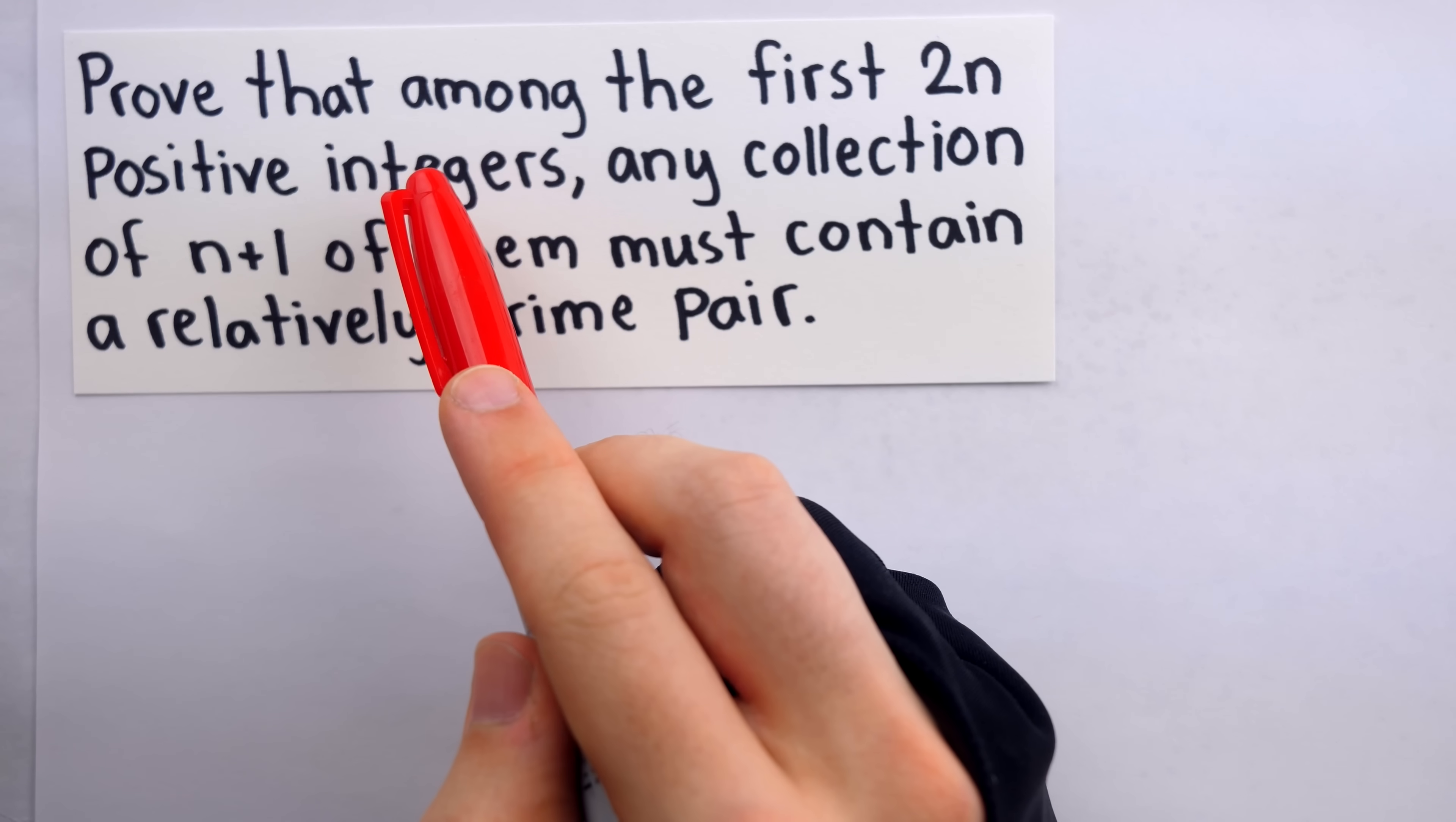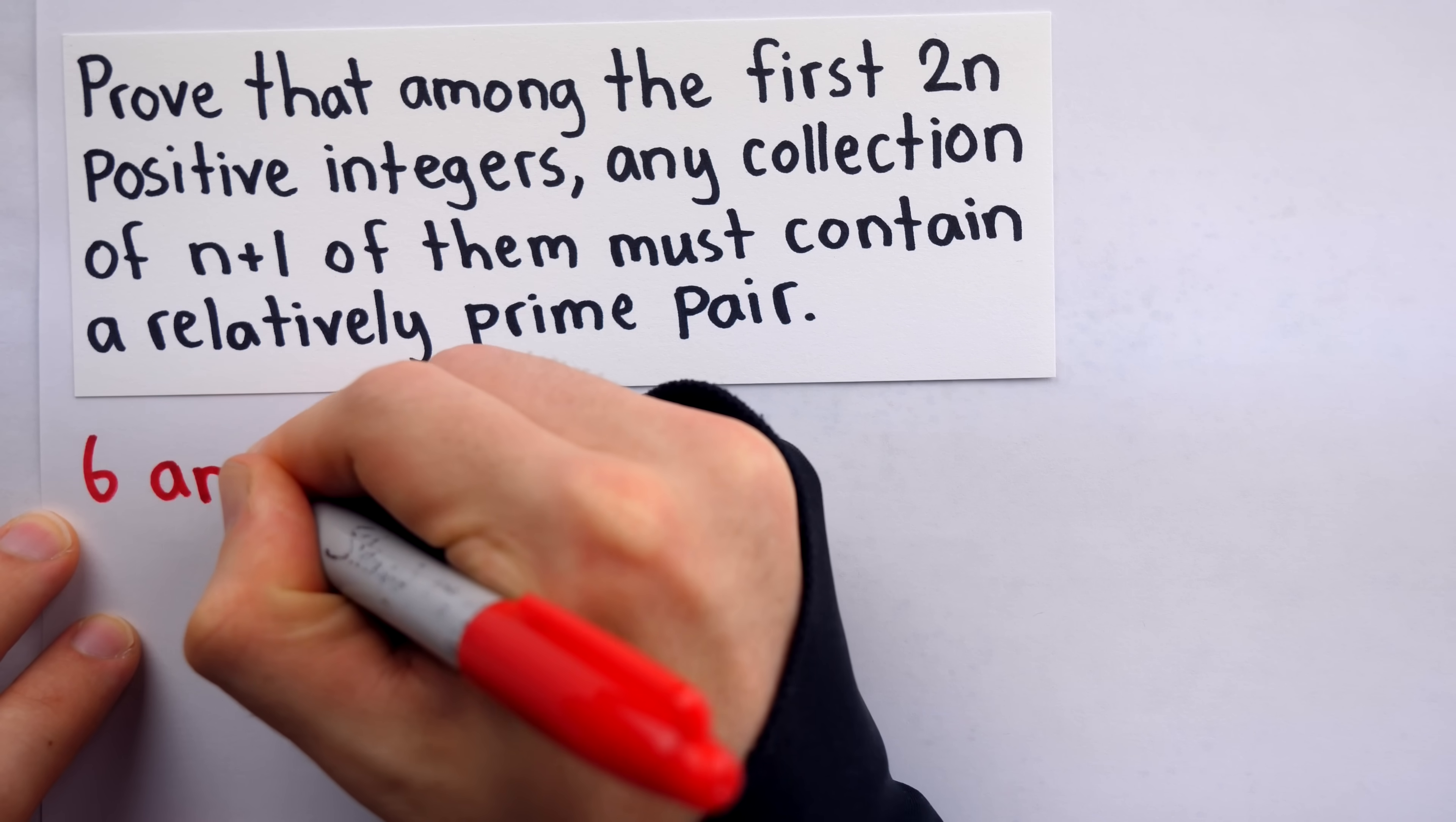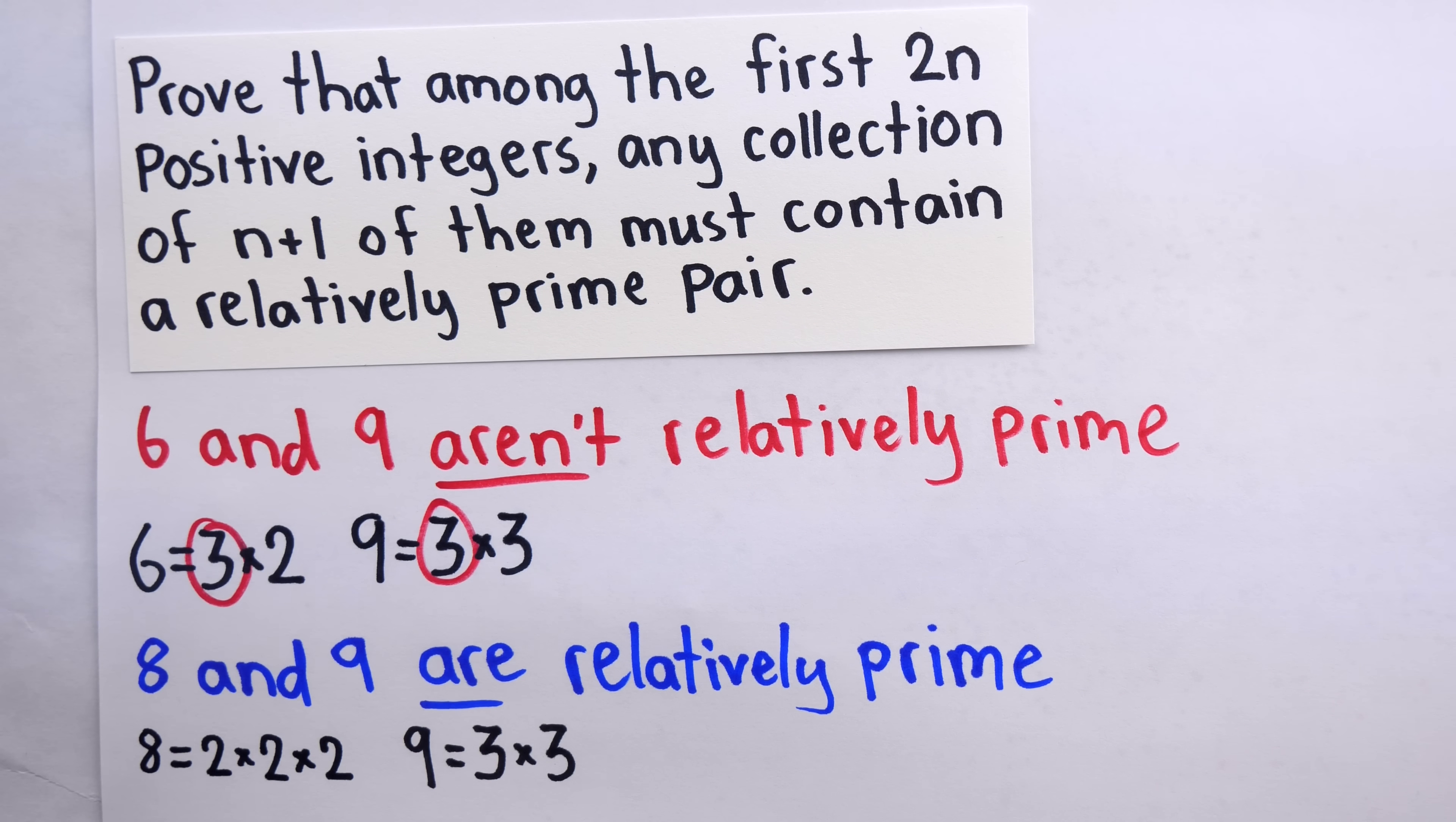Positive integers are the numbers 1, 2, 3, 4, 5, 6, etc. And relatively prime numbers are numbers with no common factor greater than 1. For example, 6 and 9 aren't relatively prime because they do have a common factor greater than 1, namely 3. On the other hand, the numbers 8 and 9 are relatively prime. They clearly have no common factor greater than 1.